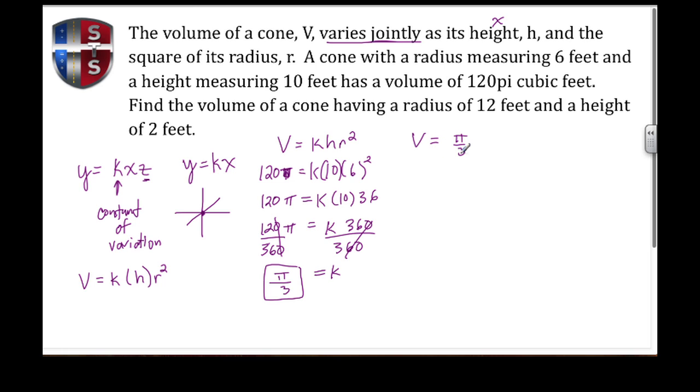Now I go to what they're asking. They want to find the volume of a cone having a radius of 12 feet and a height of 2 feet. So we don't know the volume, but we know the constant of variation is π over 3, the height is 2, and the radius is 12, which needs to be squared.